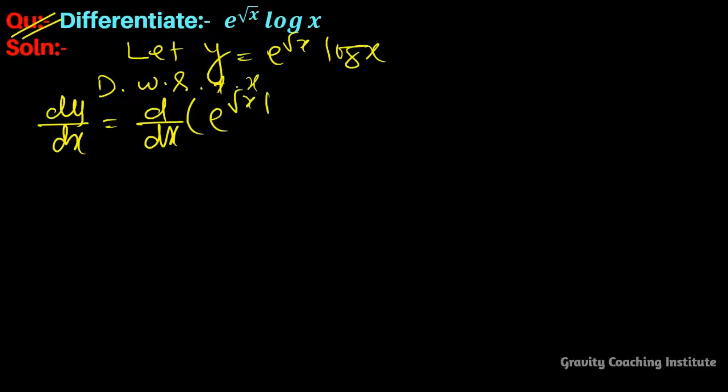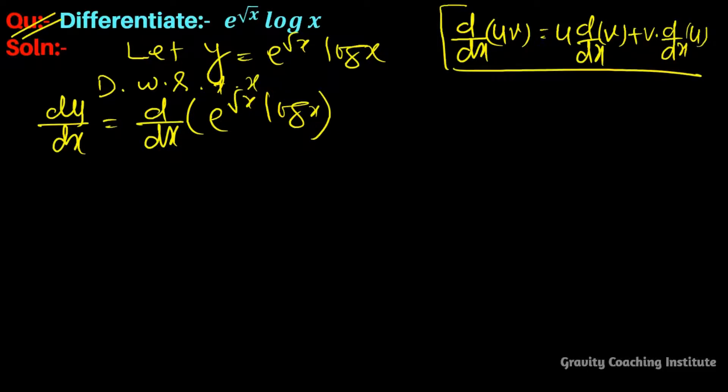And now we use the product rule. So we know that u times derivative of v plus v times derivative of u. So now we apply here. E to the power root x into derivative of log x.